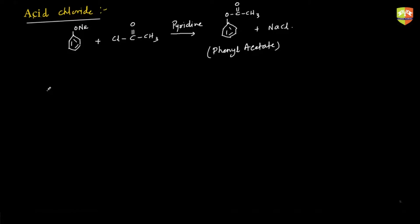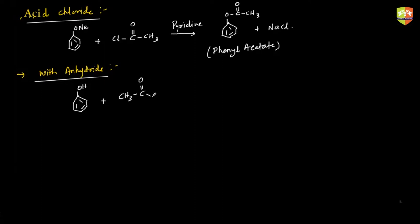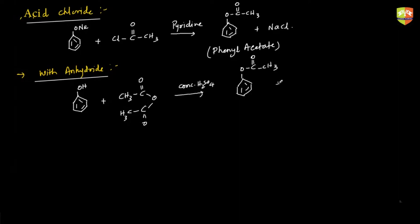Another reaction uses acetic anhydride. Phenol directly, when heated with CH3-C(=O)-O-C(=O)-CH3 and concentrated H2SO4, gives the same compound — phenyl acetate — along with CH3COOH as a byproduct. So acetic anhydride gives phenolic ester.